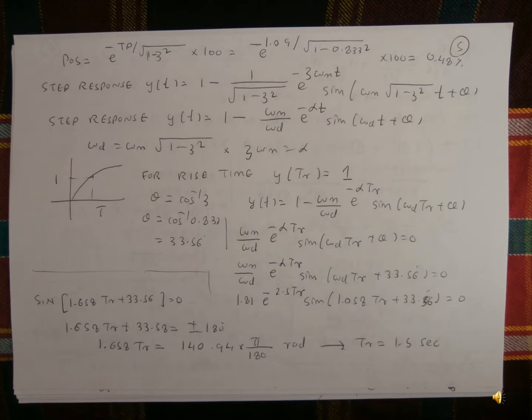For y(t), it is equal to 1 minus 1 divided by square root of 1 minus z squared, multiplied by e to the power of minus z·ωn·t, multiplied by sin of ωn times square root of 1 minus z squared times t plus β. And third, y(t) equal to 1 minus ωn by ωd, multiplied by e to the power of minus α·t, times sin of ωd·t plus β.